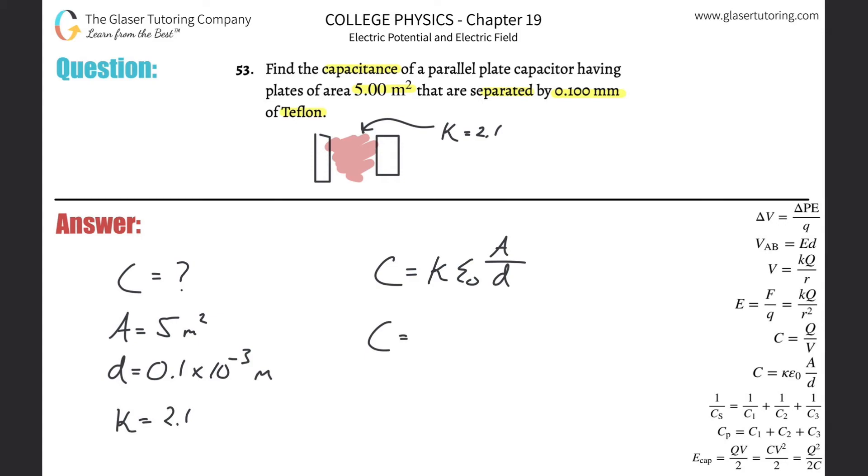So plug it in. So 2.1 is the dielectric constant. The permittivity of free space is 8.85 times 10 to the minus 12th. The area, meter squared, that's 5. The distance was 0.1 times 10 to the minus 3.